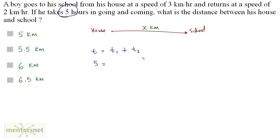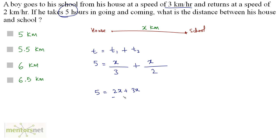The distance is x km, so the time going is x by 3, and the time returning is x by 2. So 5 equals x by 3 plus x by 2. Taking LCM 6: 5 equals 2x plus 3x by 6. Multiplying both sides by 6 gives 30 equals 5x.